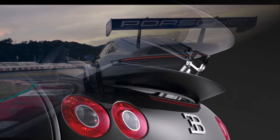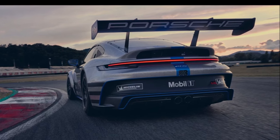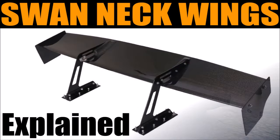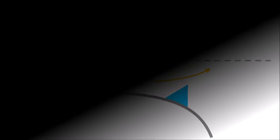Since the air flows around both sides of the wing, the mounting is very important. Check out my other video if you want to know more about wing mountings. So in summary: a spoiler has airflow on one side, a wing on both sides. I hope you liked this short explanation — see you at the next video.